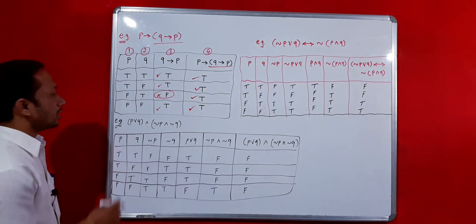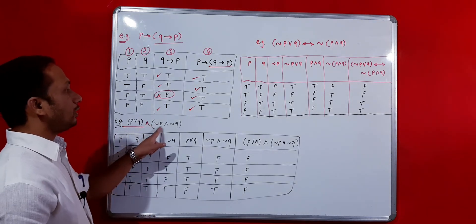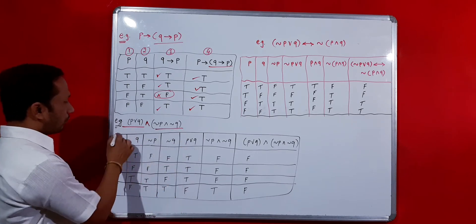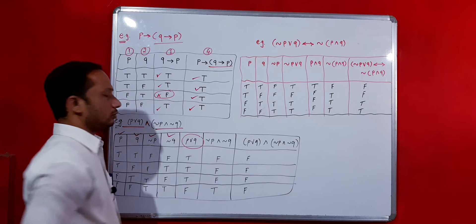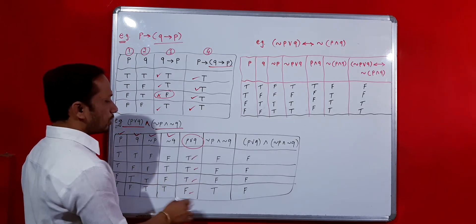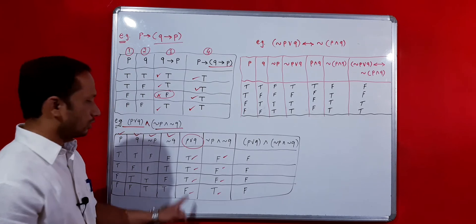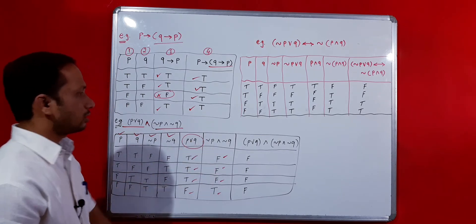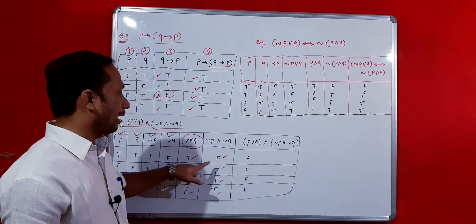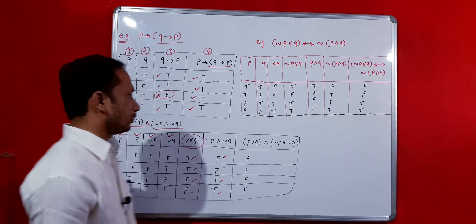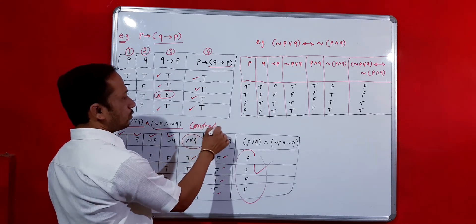Second example — contradiction: the statement pattern is (P OR Q) AND (NOT P AND NOT Q). Write columns for P, Q, negation of P, negation of Q. P OR Q gives: T, T, T, F. NOT P AND NOT Q gives: F, F, F, T. The final AND of these two columns gives: F, F, F, F — all false. So this is an example of contradiction.